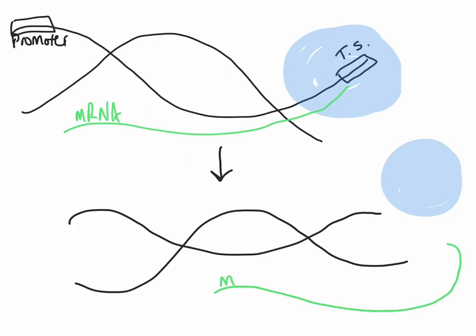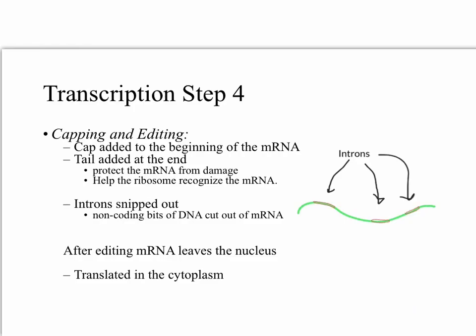The last stage of transcription is capping and editing. A cap will be added to the beginning and a tail to the ending of our mRNA molecule. This will help protect it as it leaves the nucleus. It will also help the ribosomes recognize the mRNA and attach. During this time editing will also occur where the introns of the mRNA are snipped out leaving behind just the exons which will be expressed.